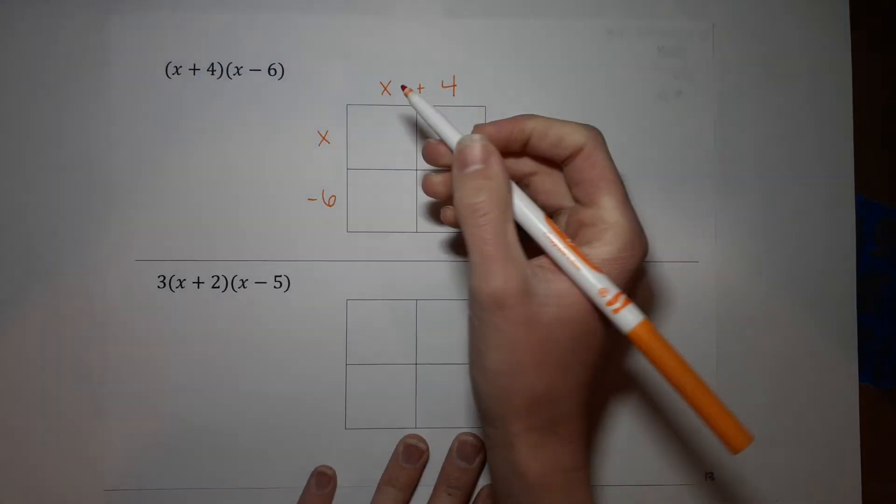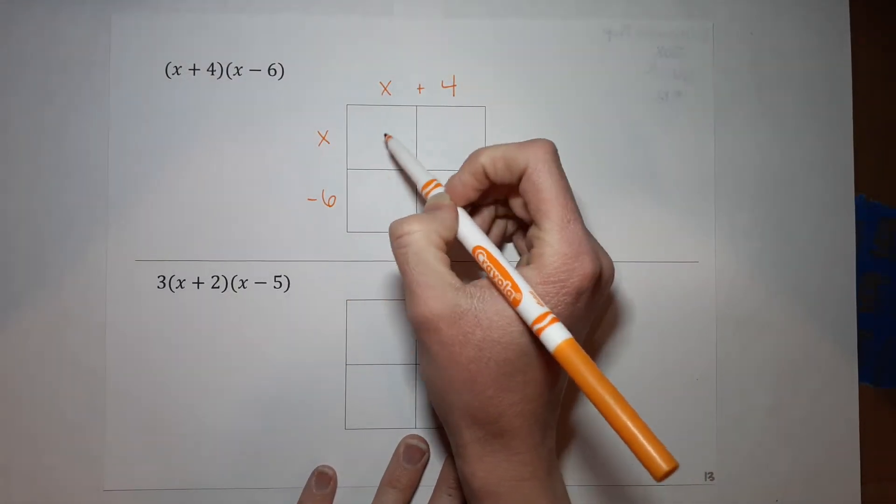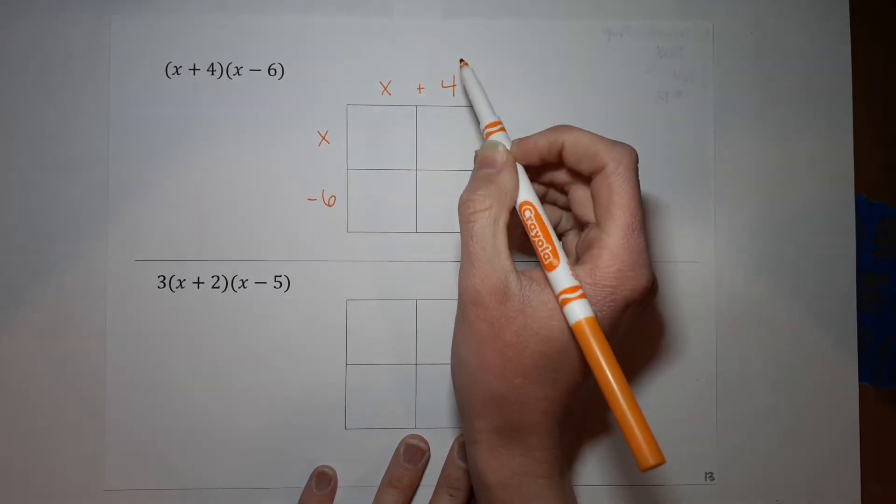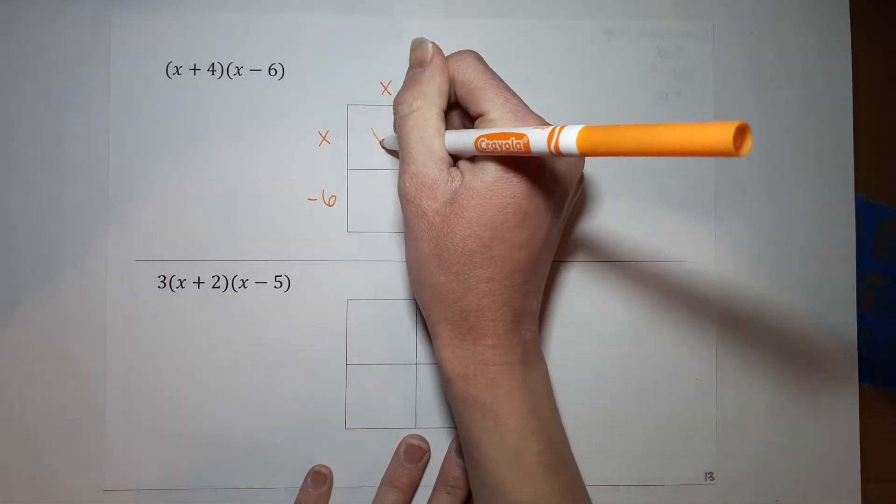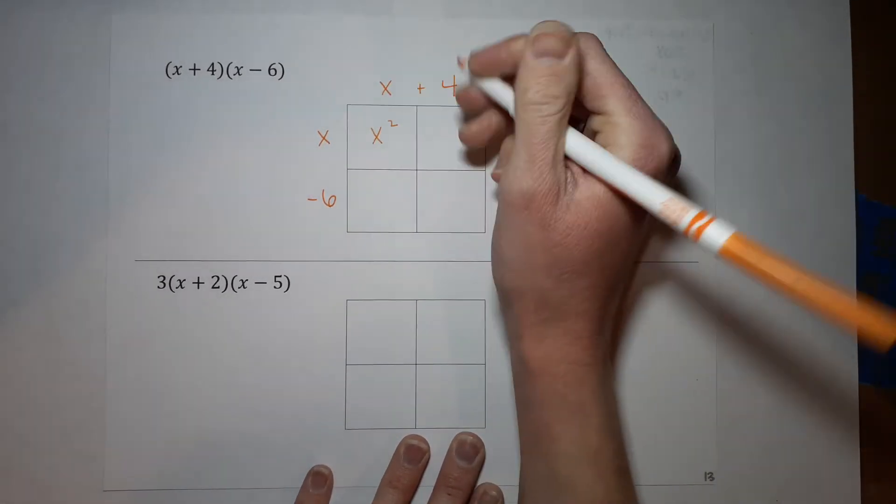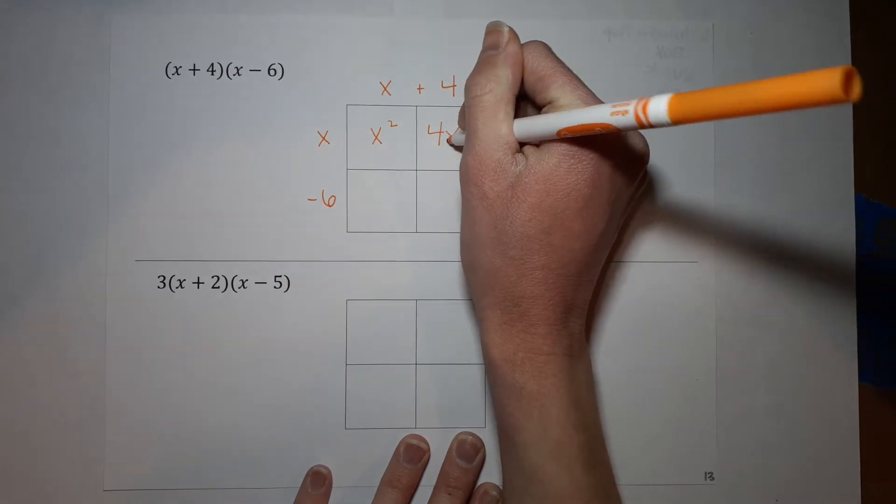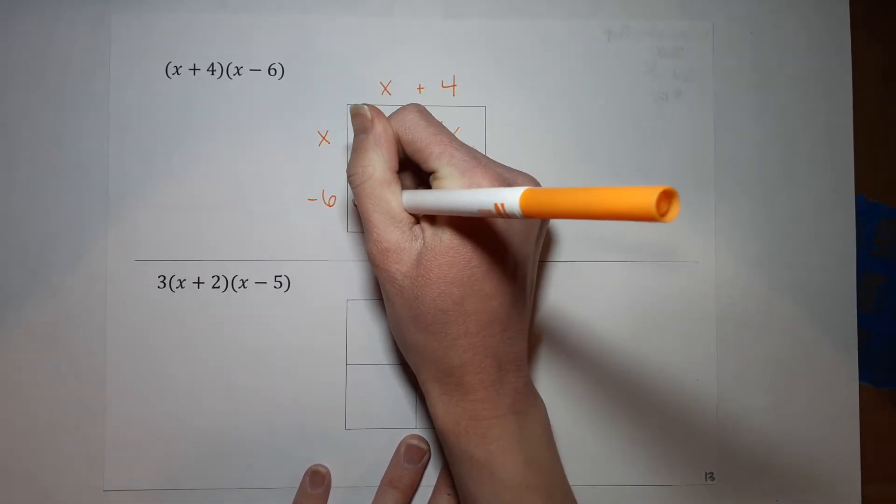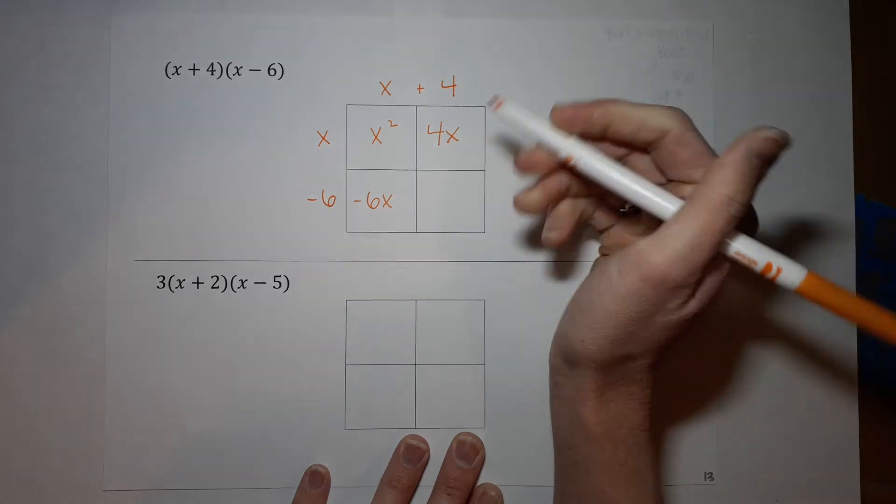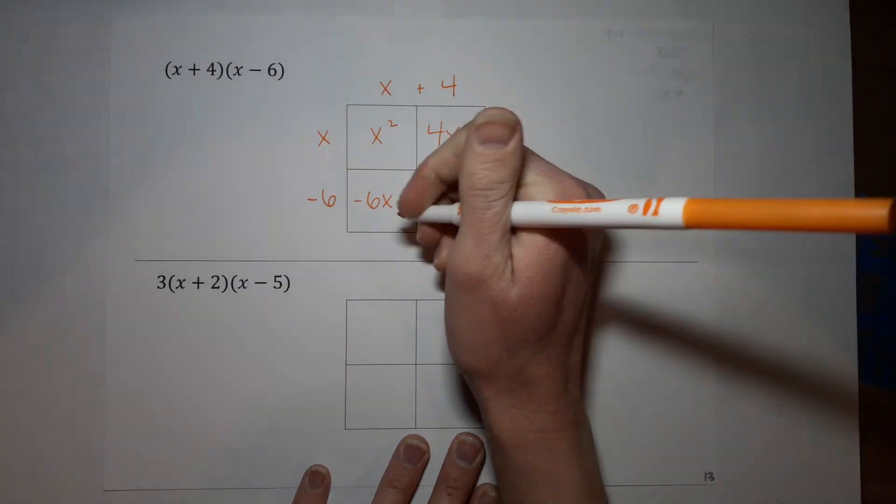All right, then you multiply them as they line up in the boxes. So x times x gives me x squared, four times x gives me four x, x times negative six gives me negative six x. See where I'm going with this?